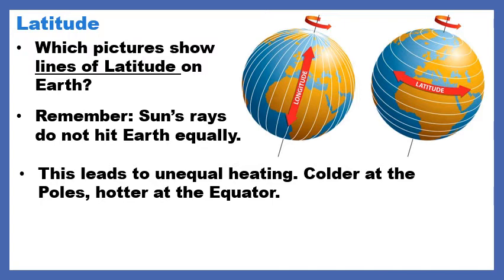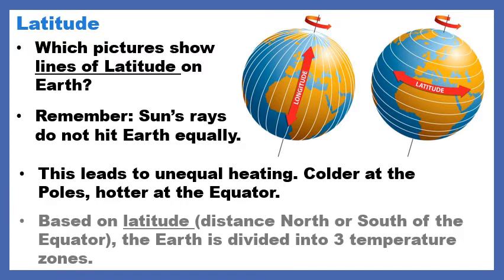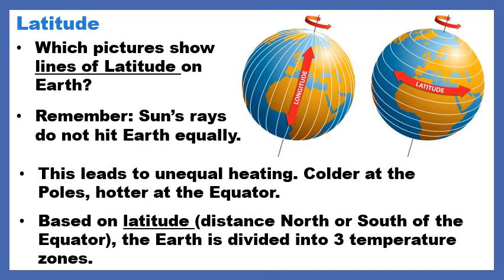The sun's rays do not hit Earth equally. You've got direct light and indirect light, and because of this, there is unequal heating on the globe — colder at the poles like the North Pole and South Pole, and much hotter at the equator. Based on latitude, which is the distance north or south from the equator, the Earth is divided into three temperature zones.